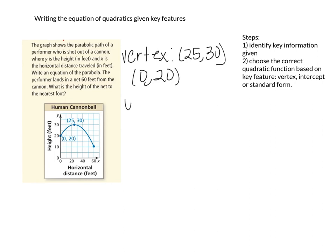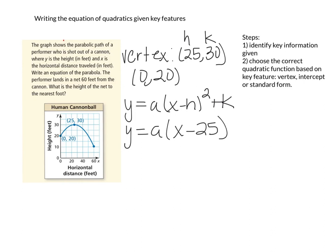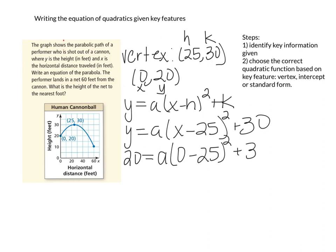Vertex form is y equals a times (x minus h) squared plus k. Remember that our vertex is h and k, so we're going to plug those in first: y equals a times (x minus 25) squared plus 30. Now I still have three unknown variables, and that's the reason why we're given a point. We're given this point as x comma y, so I can plug in 0 for x and 20 for y.